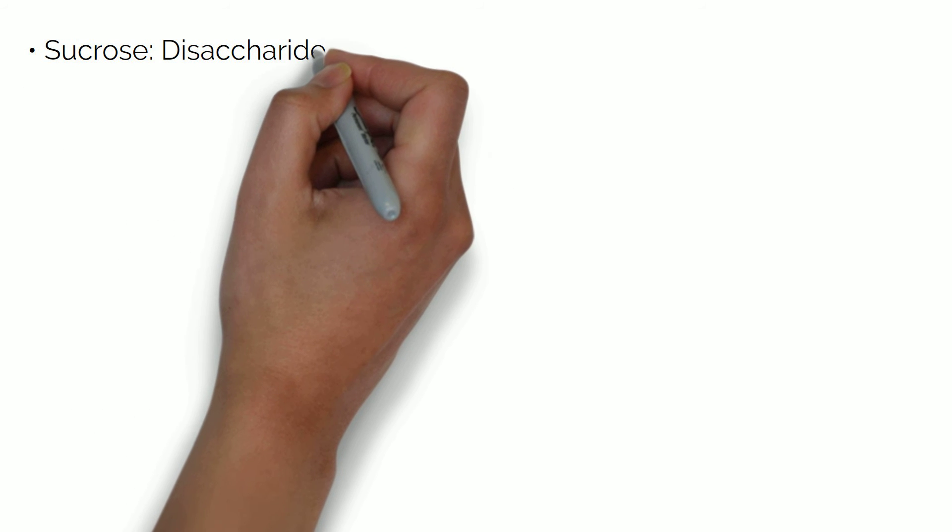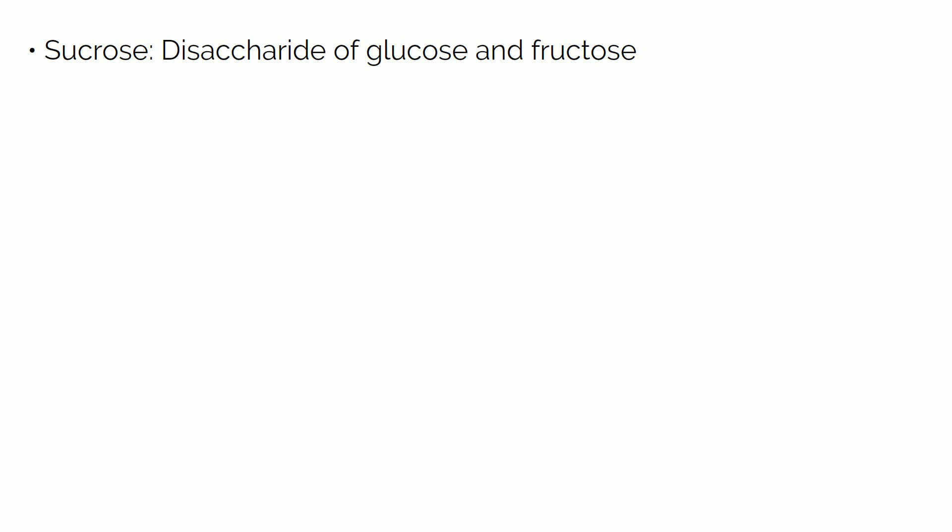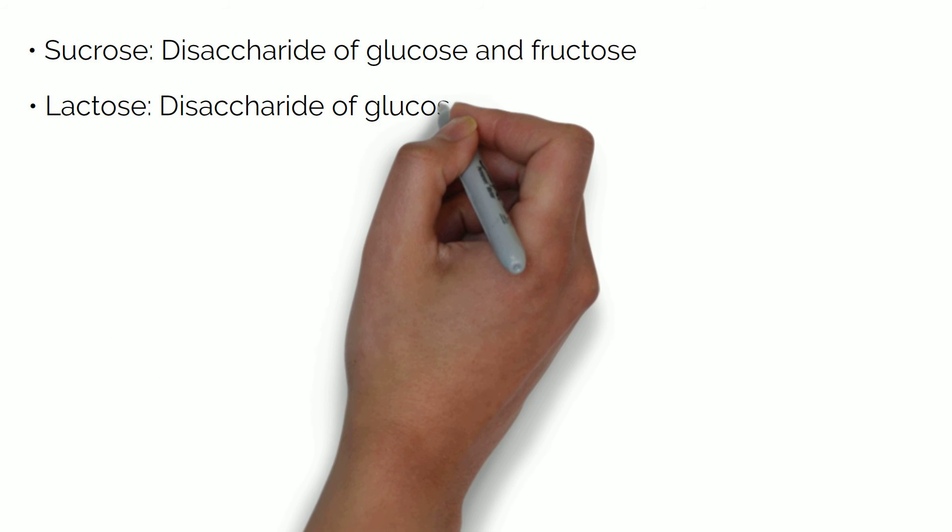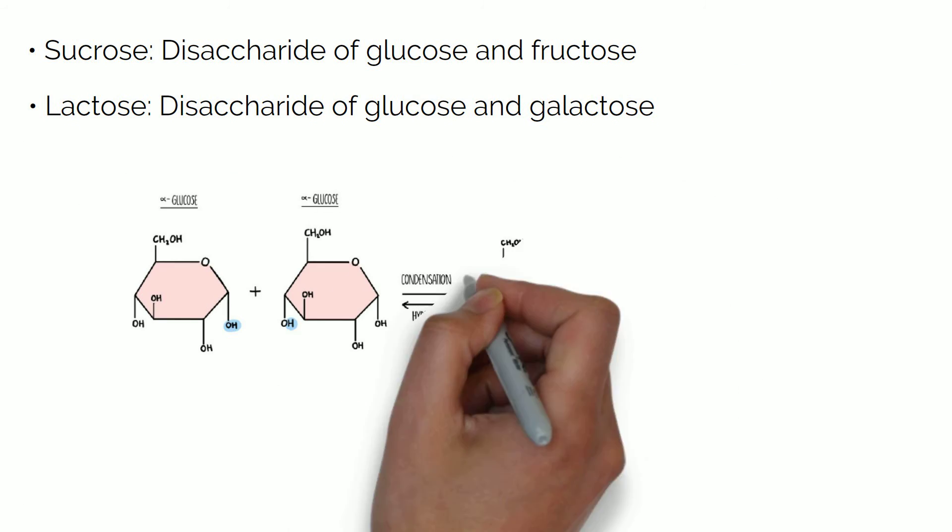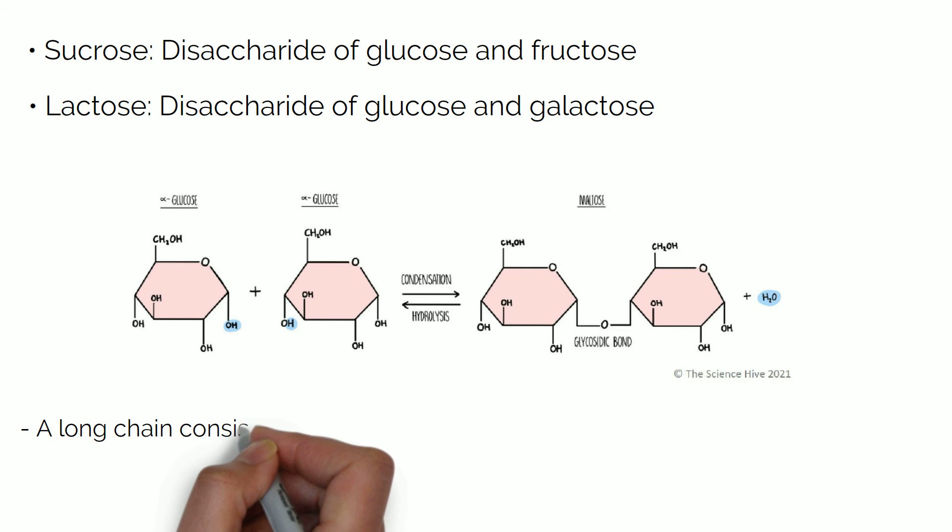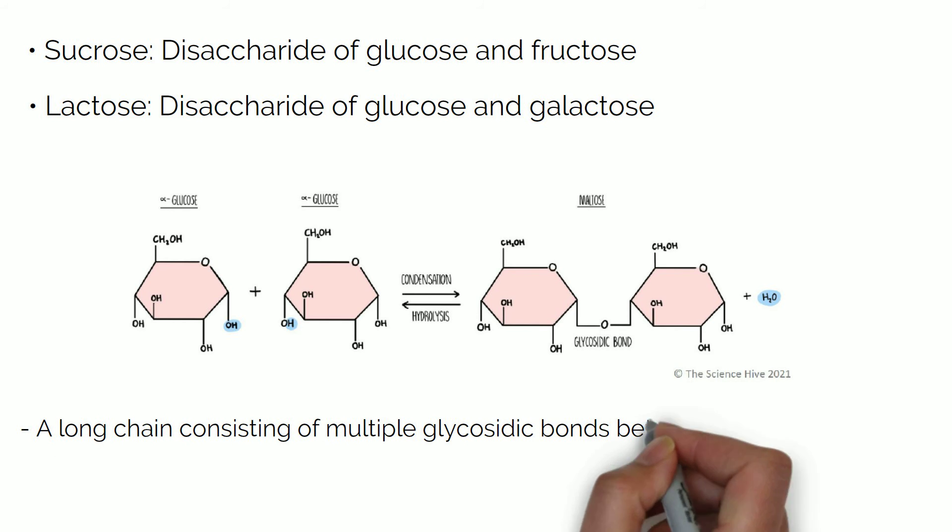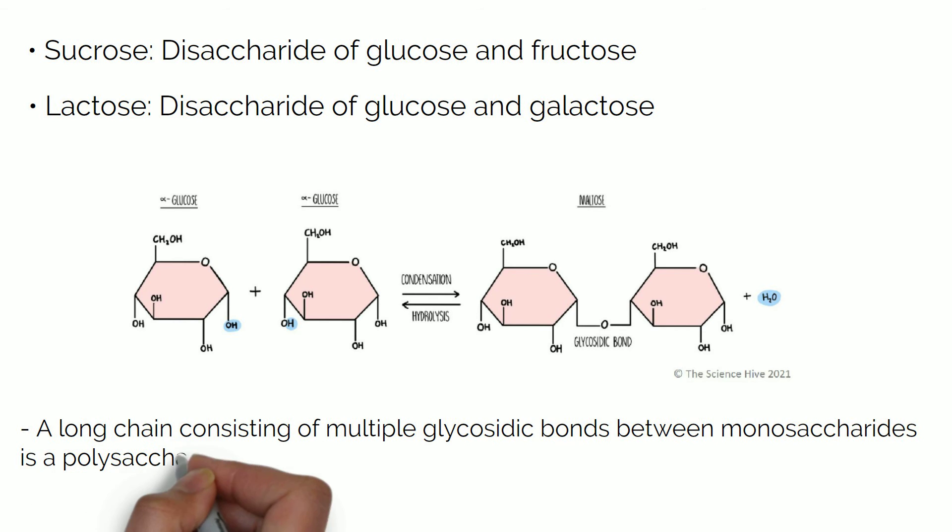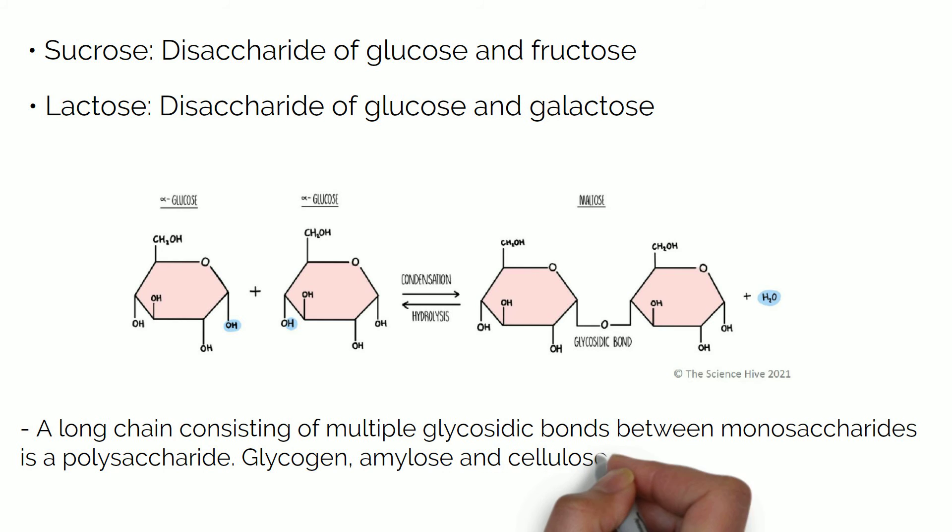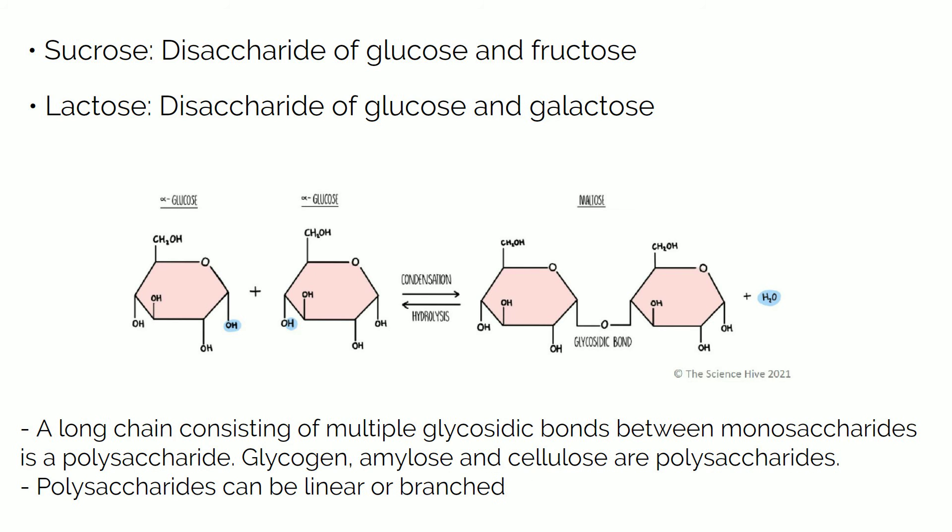Examples of disaccharides are sucrose, which is a disaccharide of glucose and fructose, and lactose, which is a disaccharide of glucose and galactose. A long chain consisting of multiple glycosidic bonds between monosaccharides is a polysaccharide. Glycogen, amylose and cellulose are polysaccharides, and polysaccharides can be linear or branched in structure.